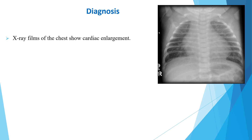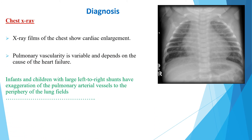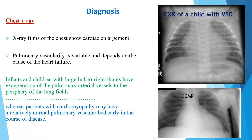Regarding diagnosis, the first modality is chest X-ray. X-ray films of the chest show cardiac enlargement, and pulmonary vascularity varies depending on the cause of the heart failure. Infants and children with large left-to-right shunts have exaggeration of pulmonary arterial vessels to the periphery of the lung fields. An image of chest X-ray of a patient with VSD and dilated cardiomyopathy shows exaggeration of pulmonary arterial vessels at the periphery of the lung fields.